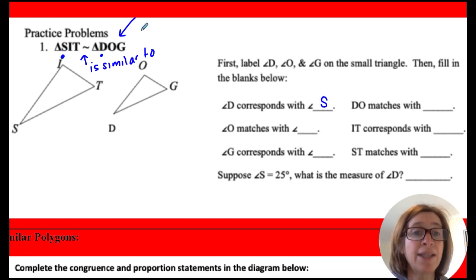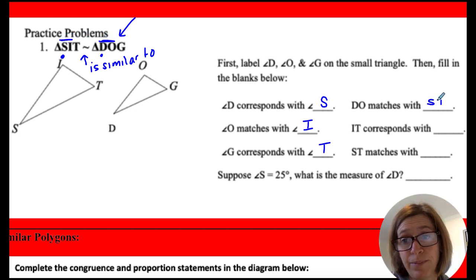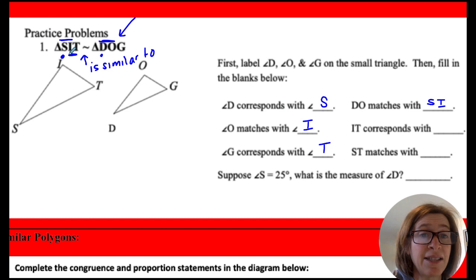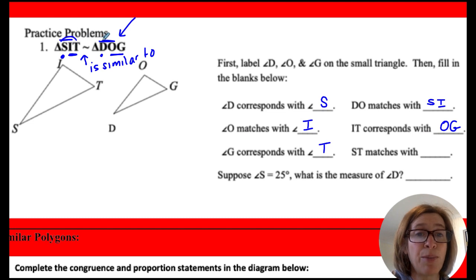Angle O is going to match up with angle I. Angle G is going to match up with angle T. Now the segments are also going to match up based on that order. So DO is going to match up with SI. IT is going to match up with OG. And ST is going to match up with DG.